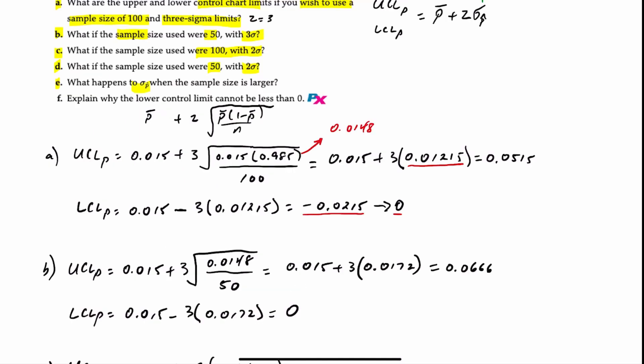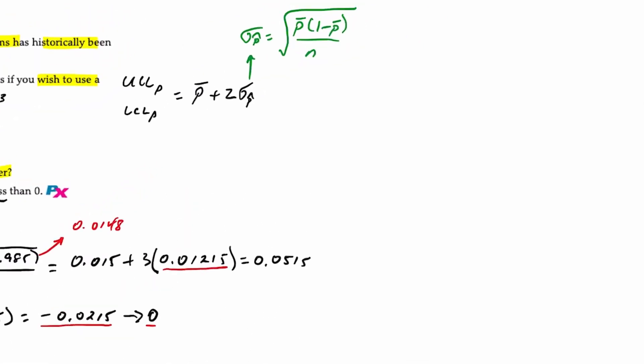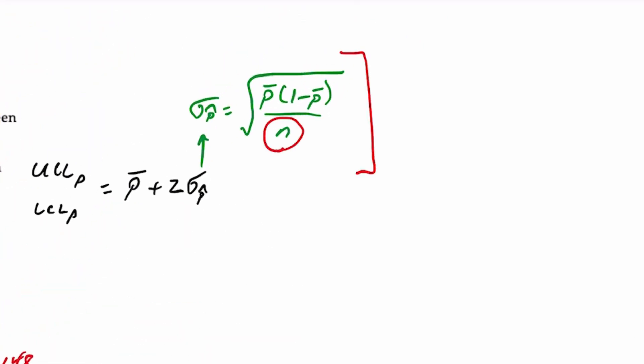Part E: we're being asked, what happens to the standard deviation of the sample proportion when the sample size is larger? Well, if we look at this formula, whenever we increase the denominator, so as n increases, the entire result will decrease.